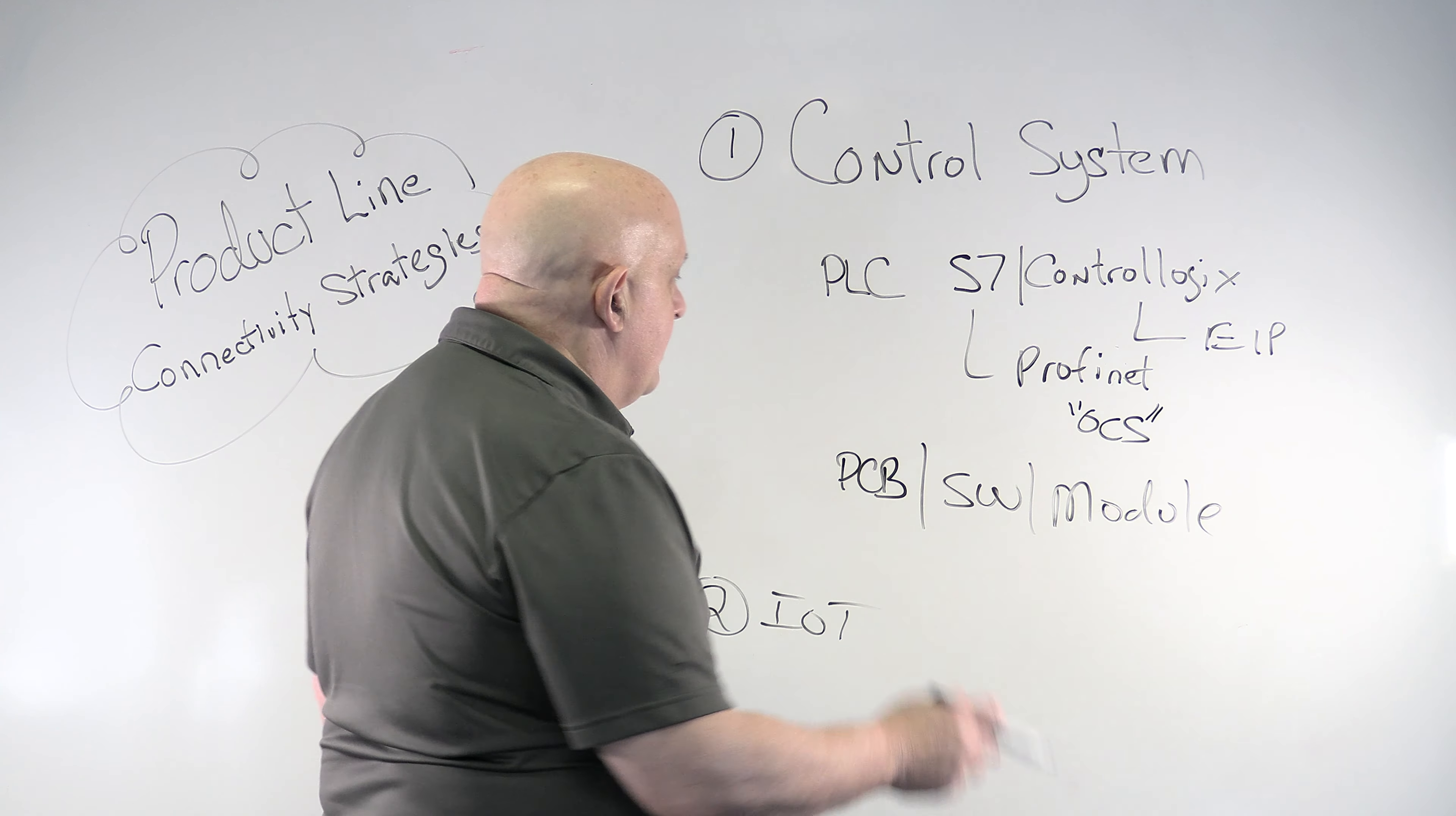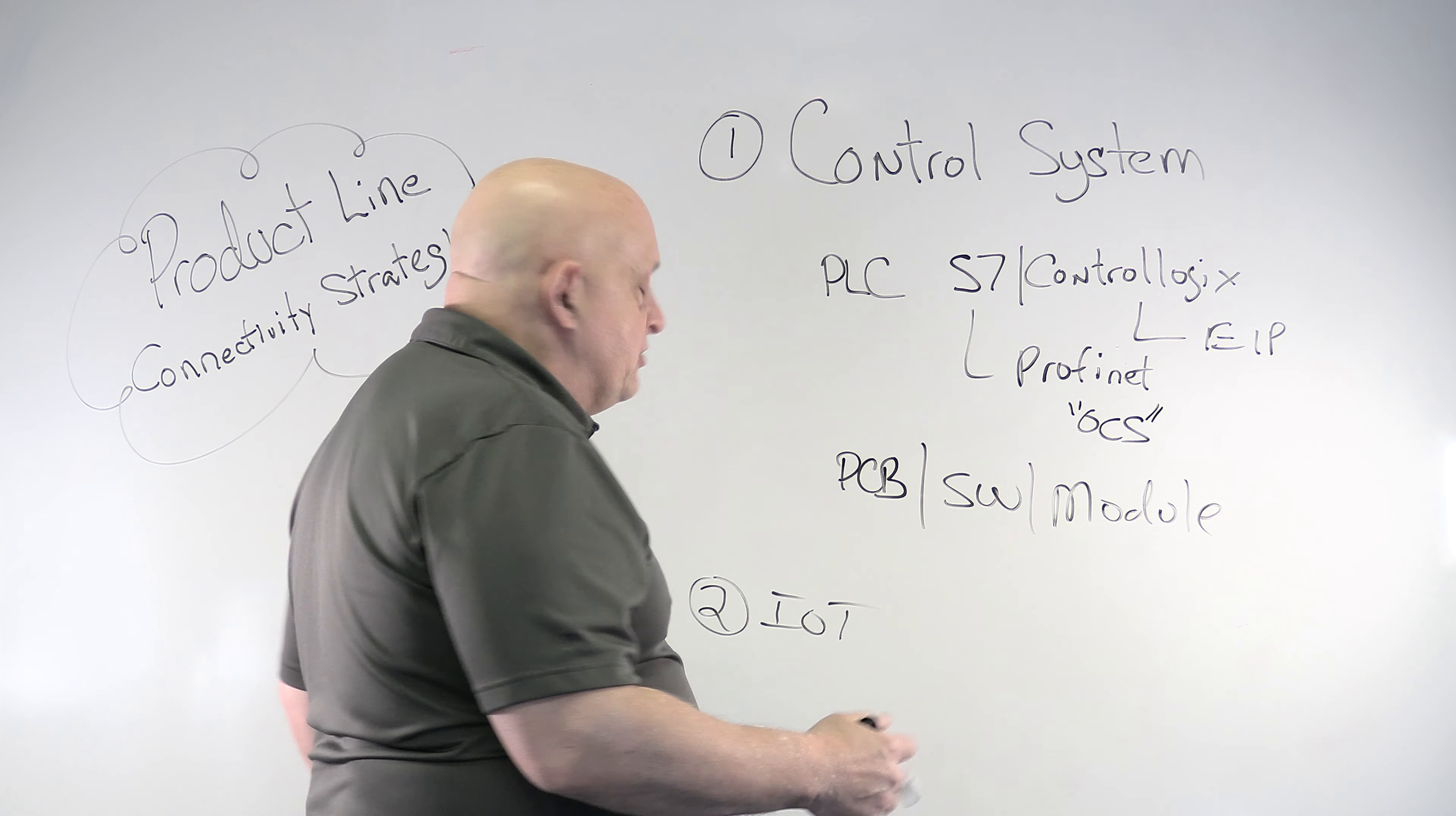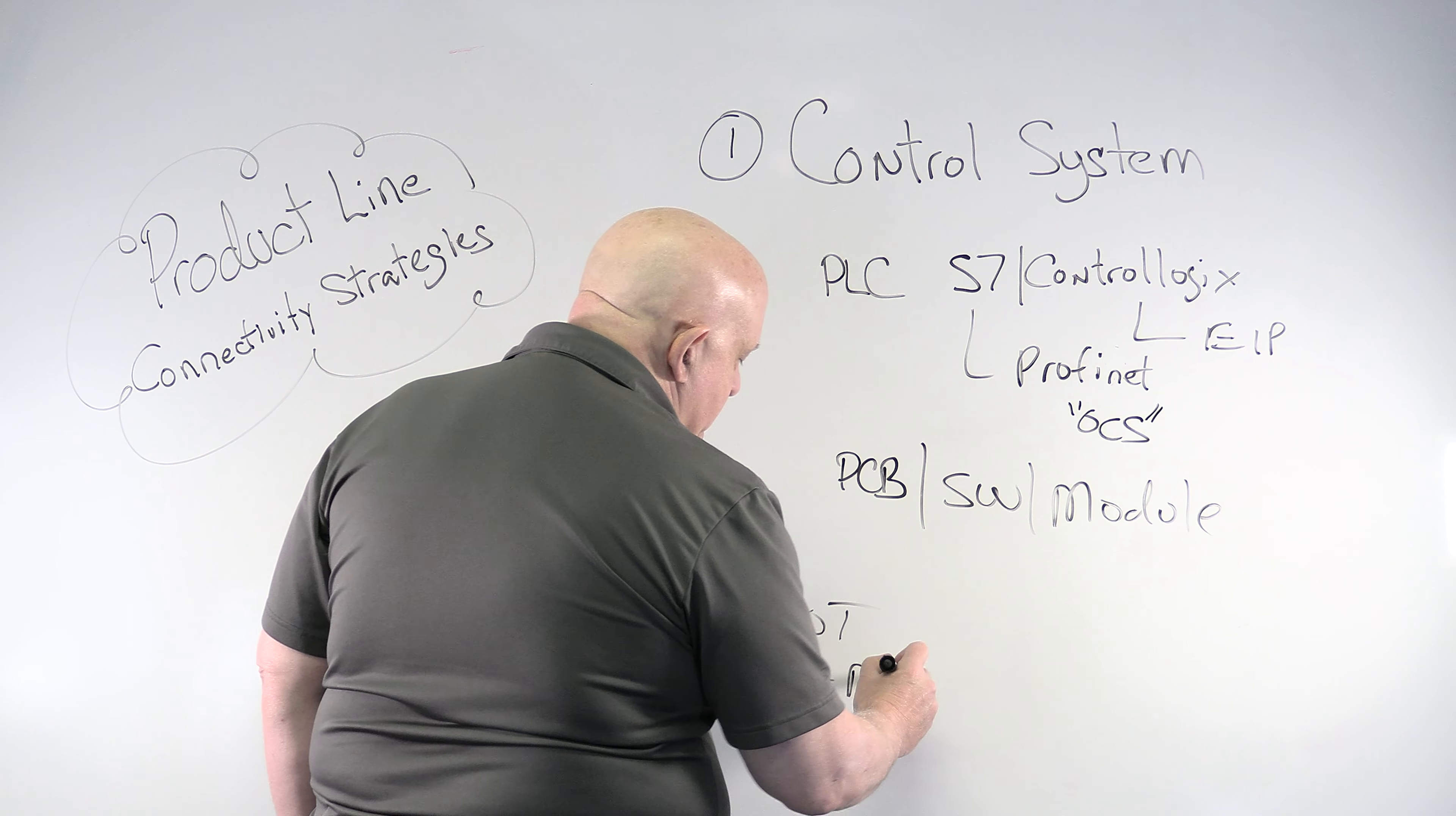So we have various ways of helping you collect data. So you collect data from the control system, from devices typically in the control system or ancillary devices. You might have temperature sensors, you might have other kinds of devices that are providing data that are not part of the control loop that you have to get. So how you get those devices is something I'm not really prepared to talk to today, because that can get into a lot, that's a pretty huge discussion.